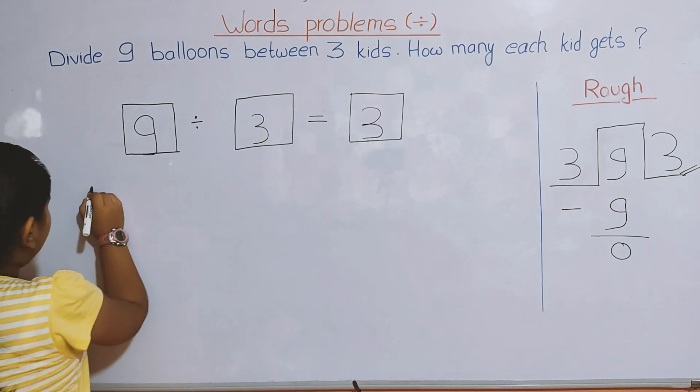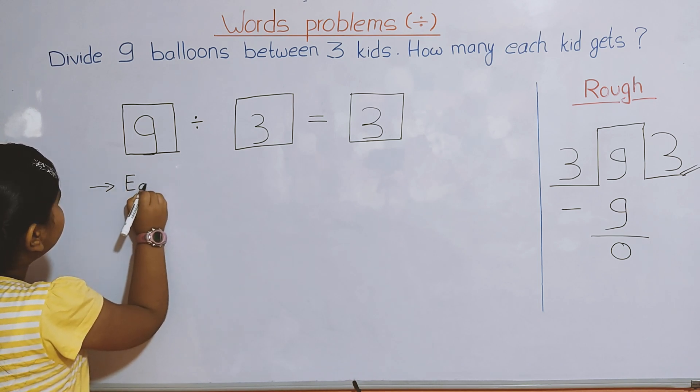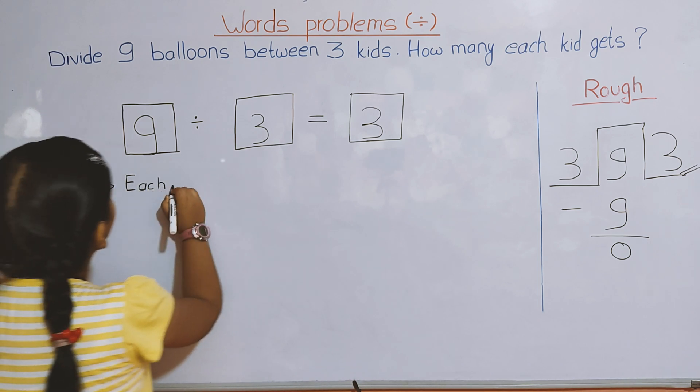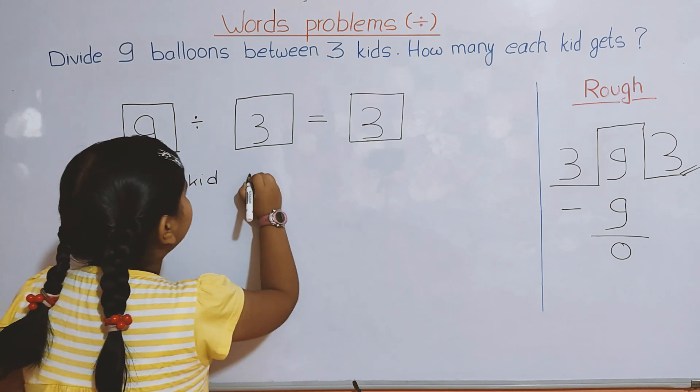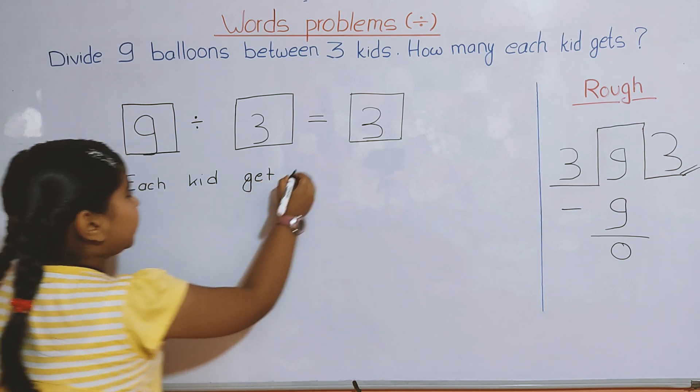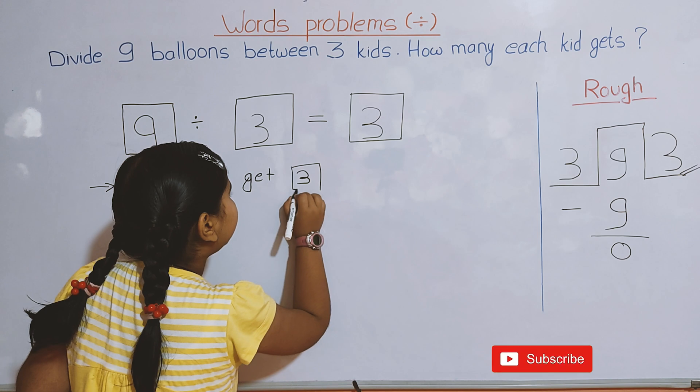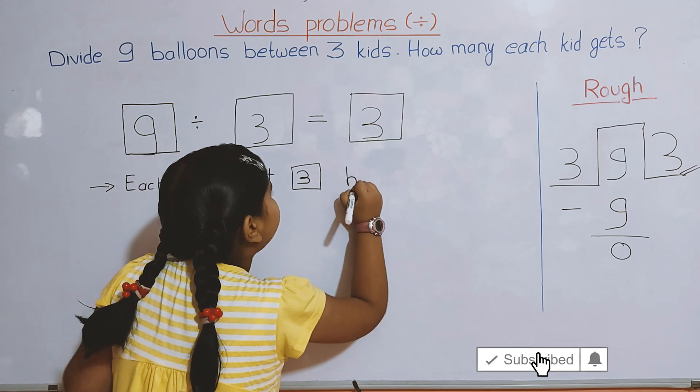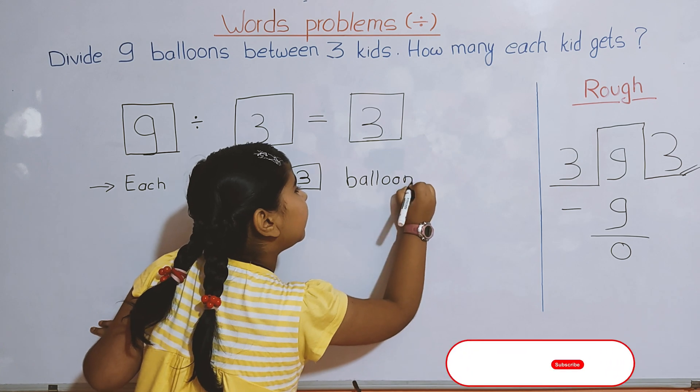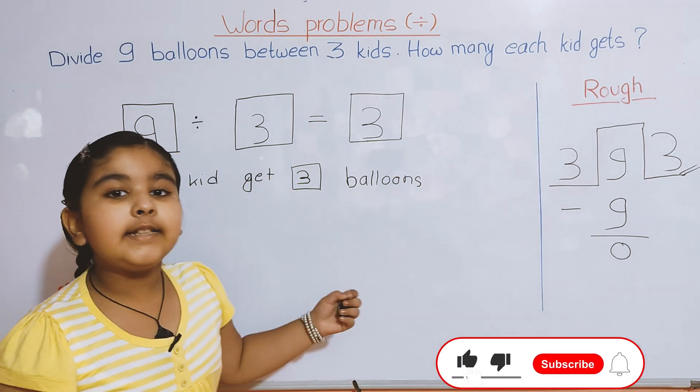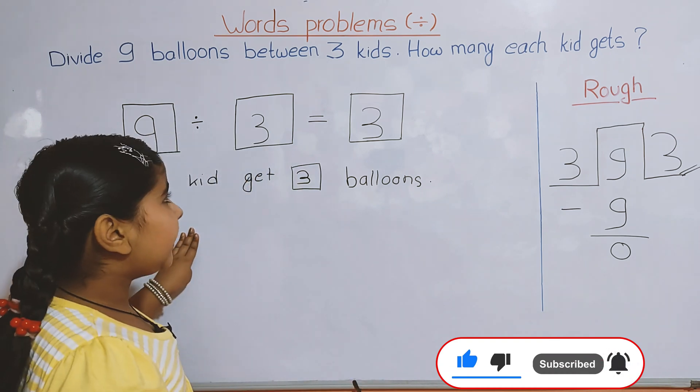Now, we write the answer here: 'Each kid gets 3 balloons.' So our answer is complete.